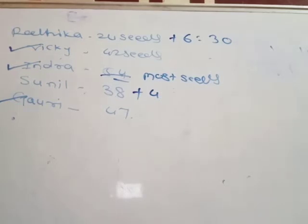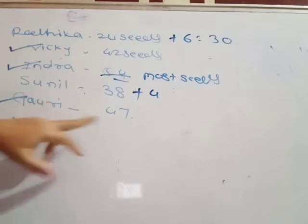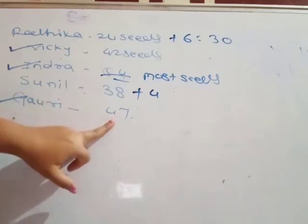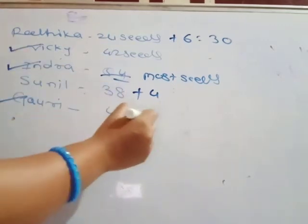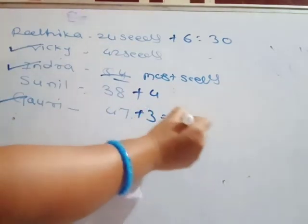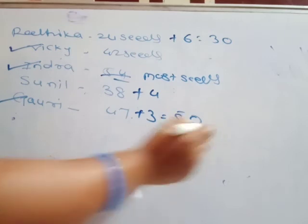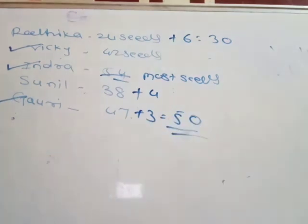Blank needs 3 more seeds to have 50. Here Gauri collected 47 seeds, then she collected again 3 more seeds to have 50 seeds. 47 plus 3 is equal to 50.